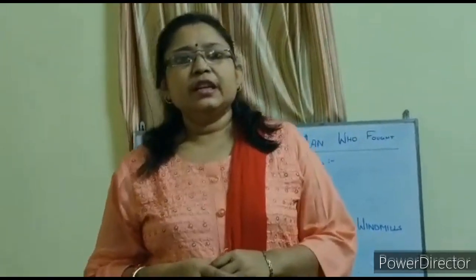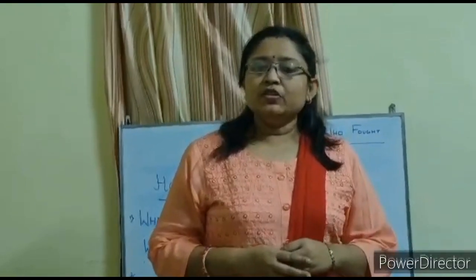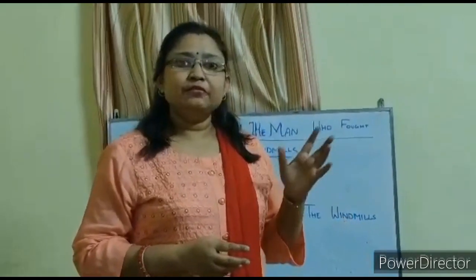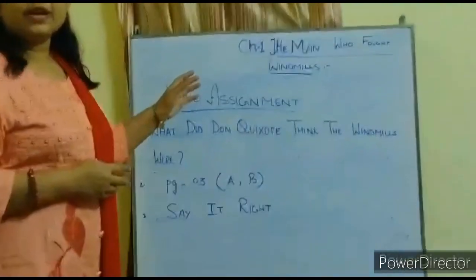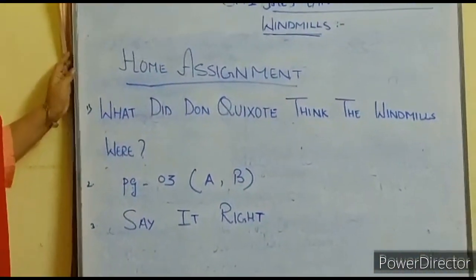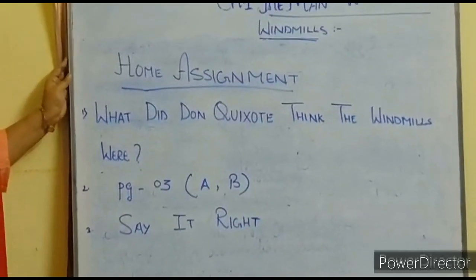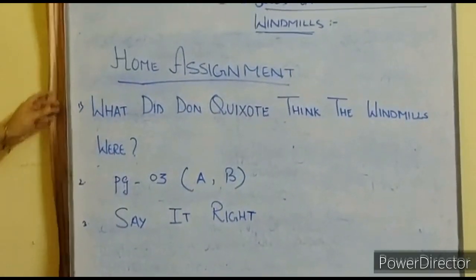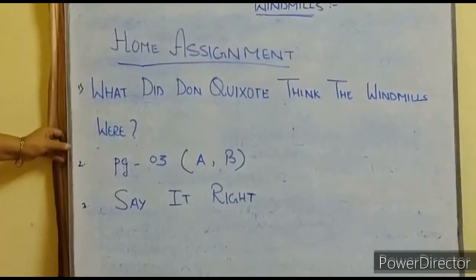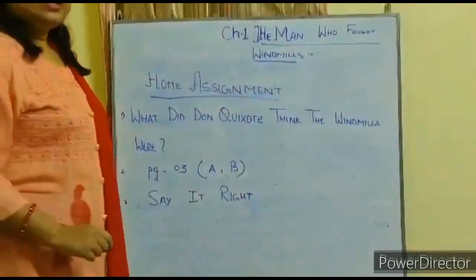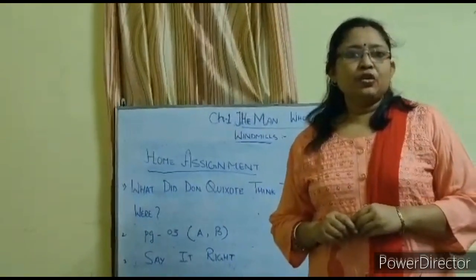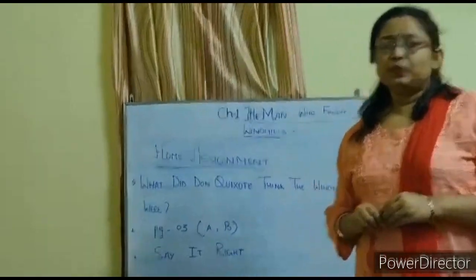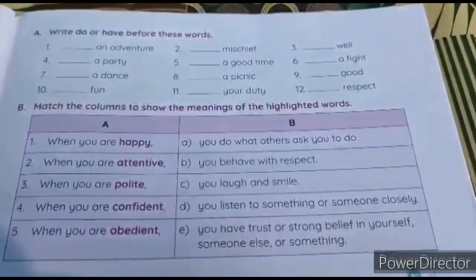Hope the explanation of the lesson is clear to you all. Now, can you tell me what you learned from the story? One basic thing we learn from the story is that we should not live in a fanciful world. Now students, let us look at the home assignments. Number one: answer the question — What did Don Quixote think the windmills were? Number two: page number 3, question number A and B. Number three: say it right. You have to do all three homeworks in your English course book. The rest of the textbook exercises will be uploaded in the parent's portal. Thank you.